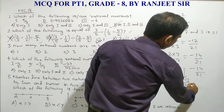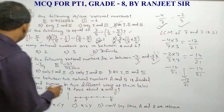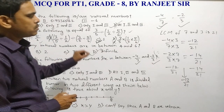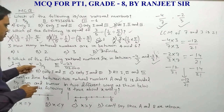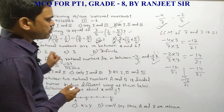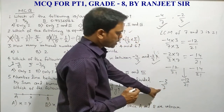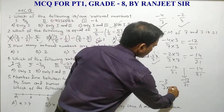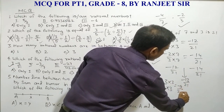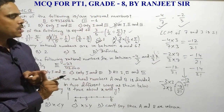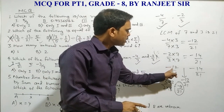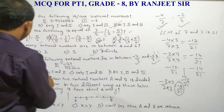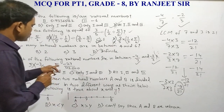Now checking the remaining options: for -3/7, we multiply numerator and denominator by 3 to get -9/21. Clearly -9/21 does not exist between -14/21 and -12/21, so this option is completely wrong and will not lie between the two given rational numbers.